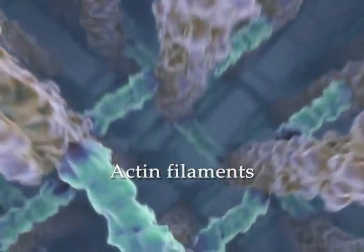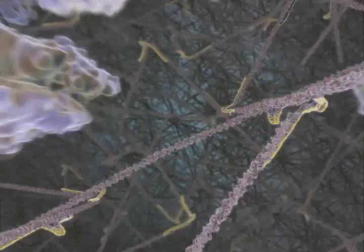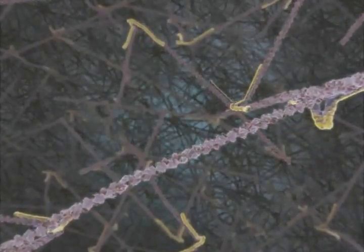Inside microvilli, actin filaments form tight parallel bundles, which are stabilized by cross-linking proteins. While deeper in the cytosol, the actin network adopts a gel-like structure, stabilized by a variety of actin-binding proteins.